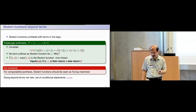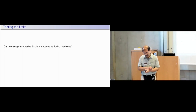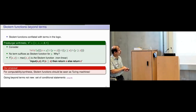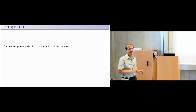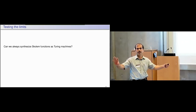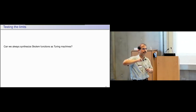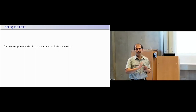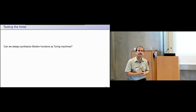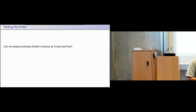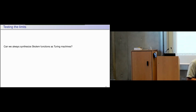Going beyond terms is not new — there has been earlier work involving conditional statements. But even when viewing these as Turing machines there are many limitations: we cannot always construct Turing machines to evaluate these Skolem functions. So we ask: can we always synthesize a Skolem function? Given a first order logic formula on a vocabulary interpreted over a structure, can I construct a Turing machine that always halts for every element I give from the universe?